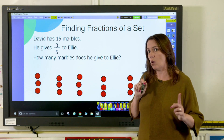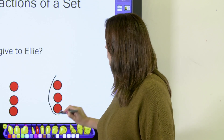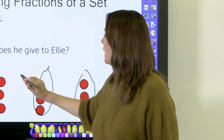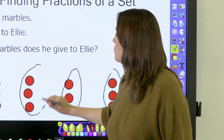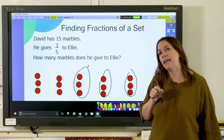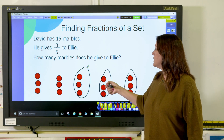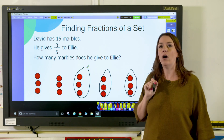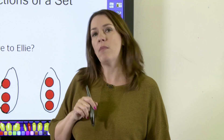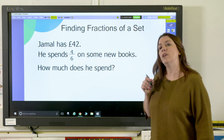But I don't want one fifth — I'm asked for three fifths. So there's one set, two sets, and three. You can see easily that three fifths of 15 is three, six, nine — so he gives nine marbles to Ellie.